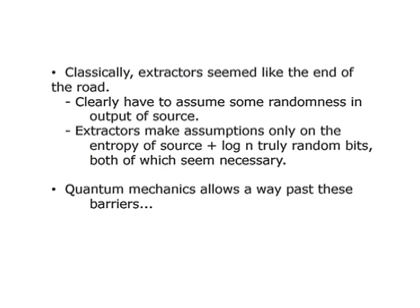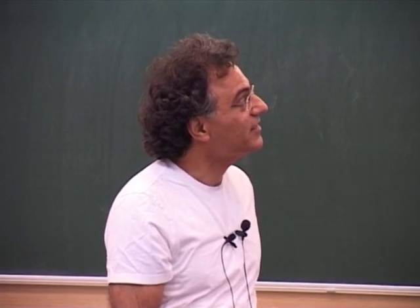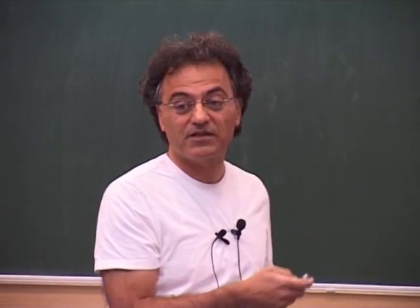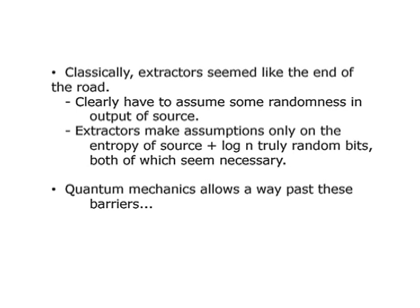Even though I don't know if this argument was made formally, it seemed like extractors were the end of the road — what else can you do? You've got to assume some randomness. Everybody who worked in this field went through this mental process of saying you have to assume some randomness in the source. Extractors make only minimal assumptions about the min entropy of the source — they assume log n truly random bits — and this amount seems essential. Maybe these are the best results you can hope for.